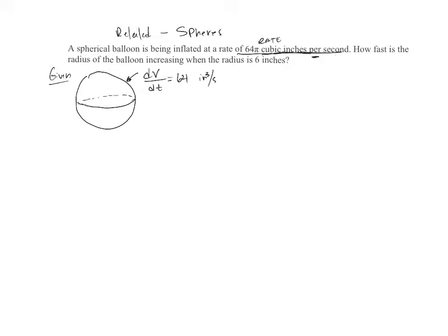Now, how fast is the radius of the balloon? How fast? That's again a rate and the radius. So this means I need to find my dr/dt. That's what I need.